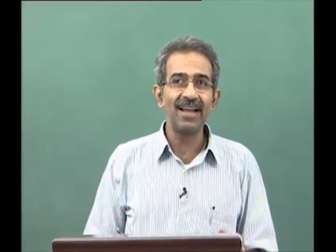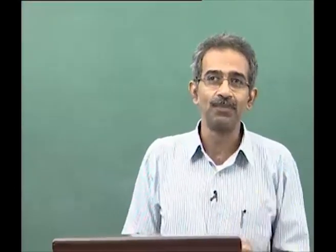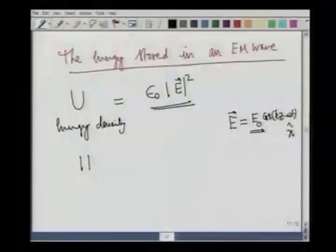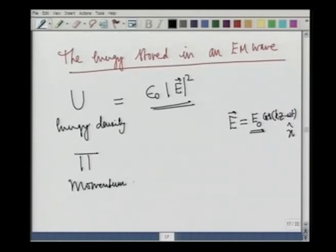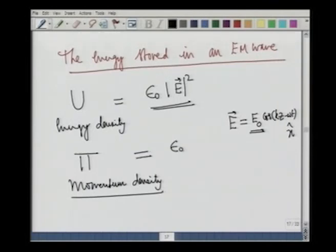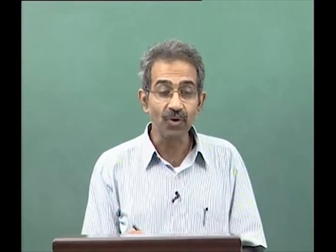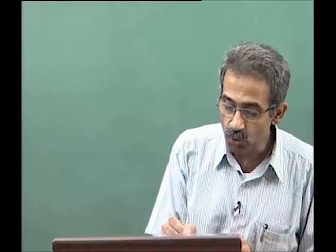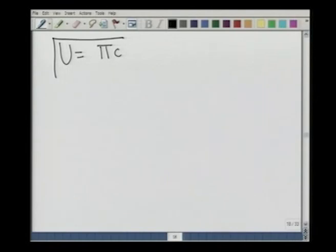Not only does light carry energy, it also carries momentum. The momentum density pi, averaged over a period, turns out to be epsilon_0 divided by c times |E|^2, which is nothing but u divided by c. This is quite a remarkable expression, which we can rewrite as u equals pi times c.